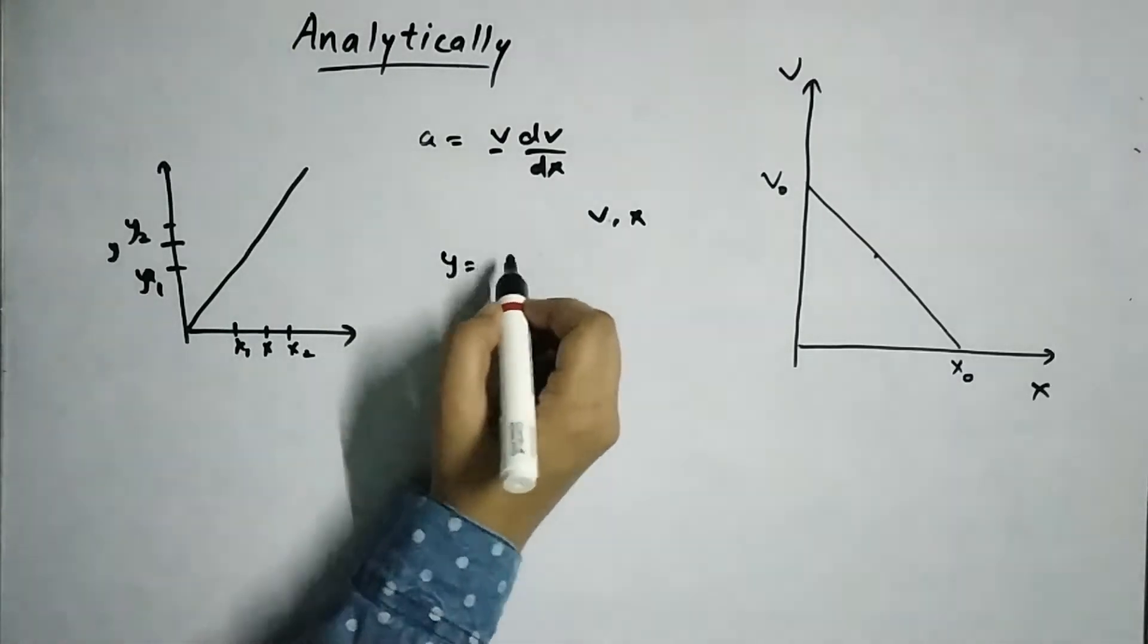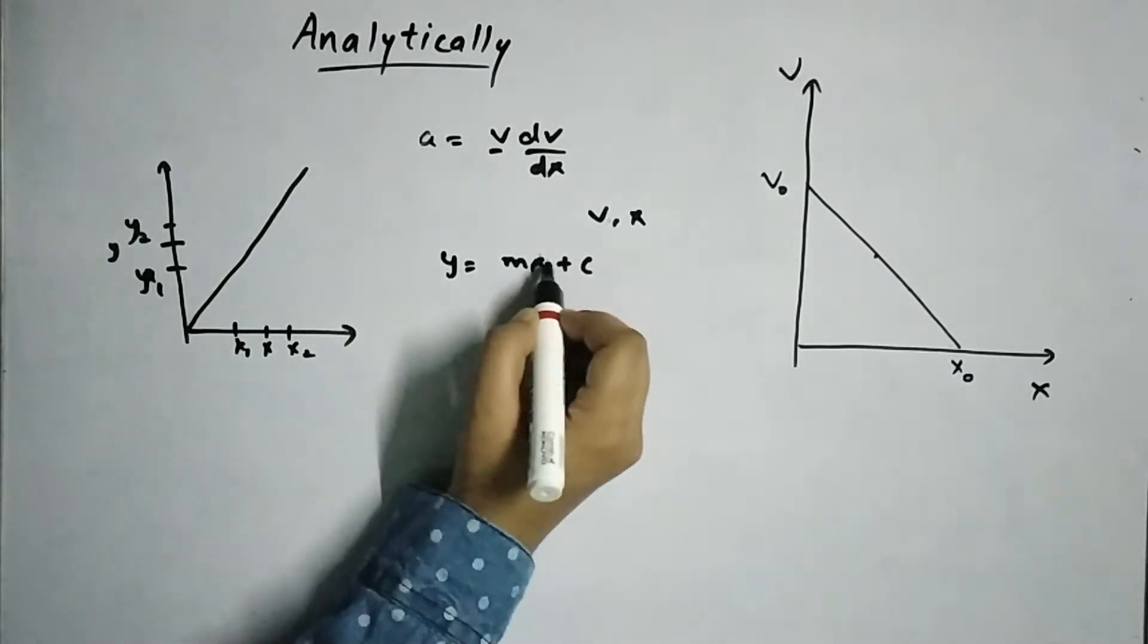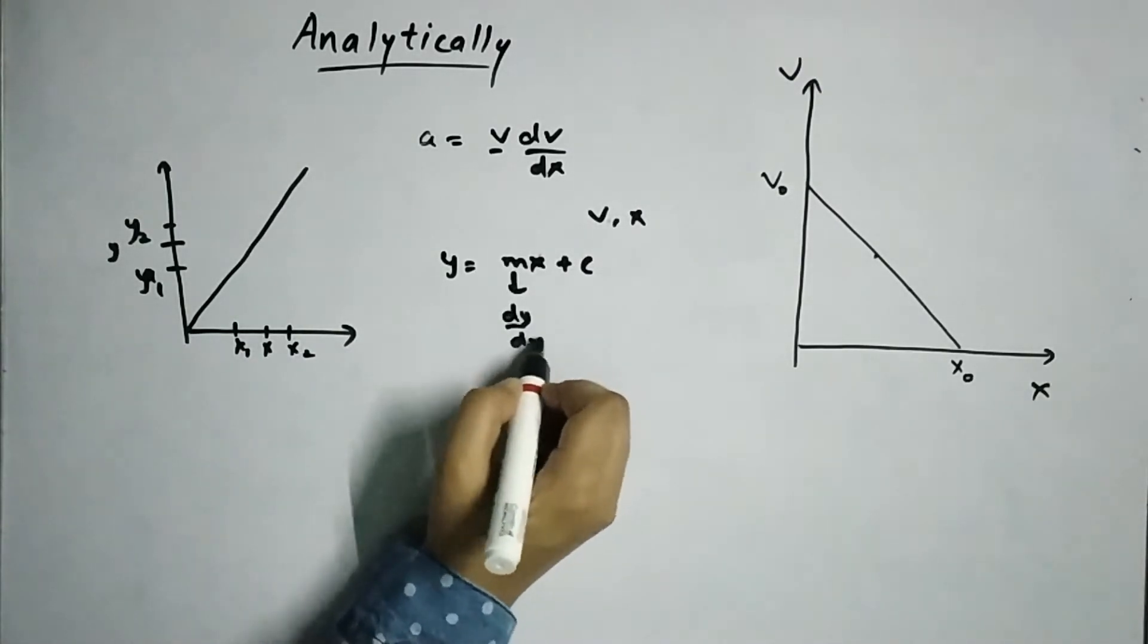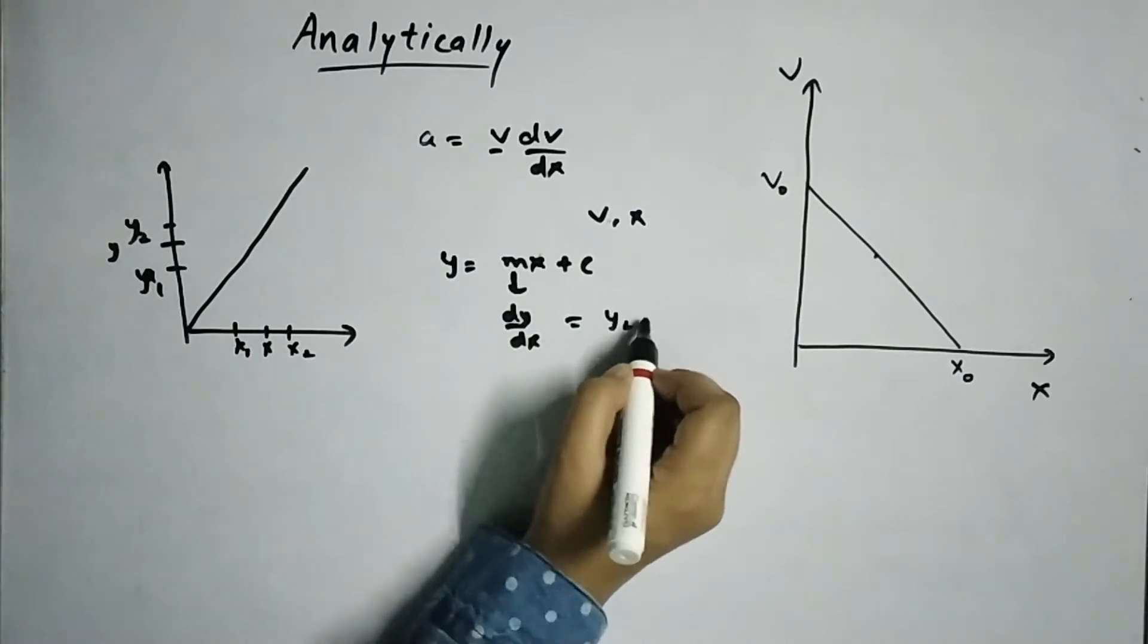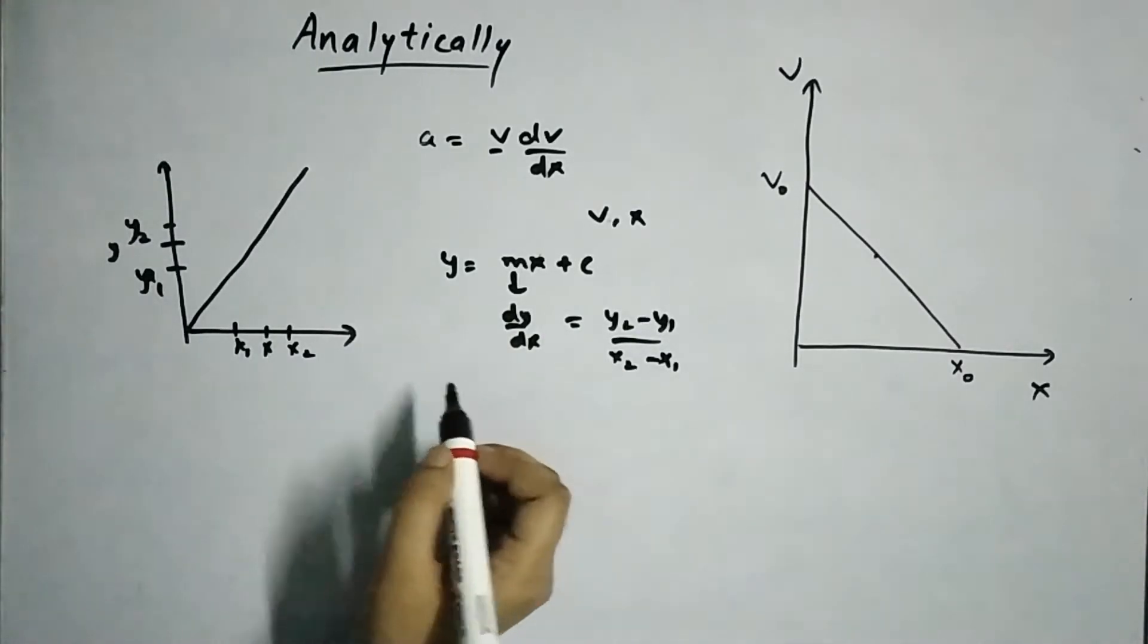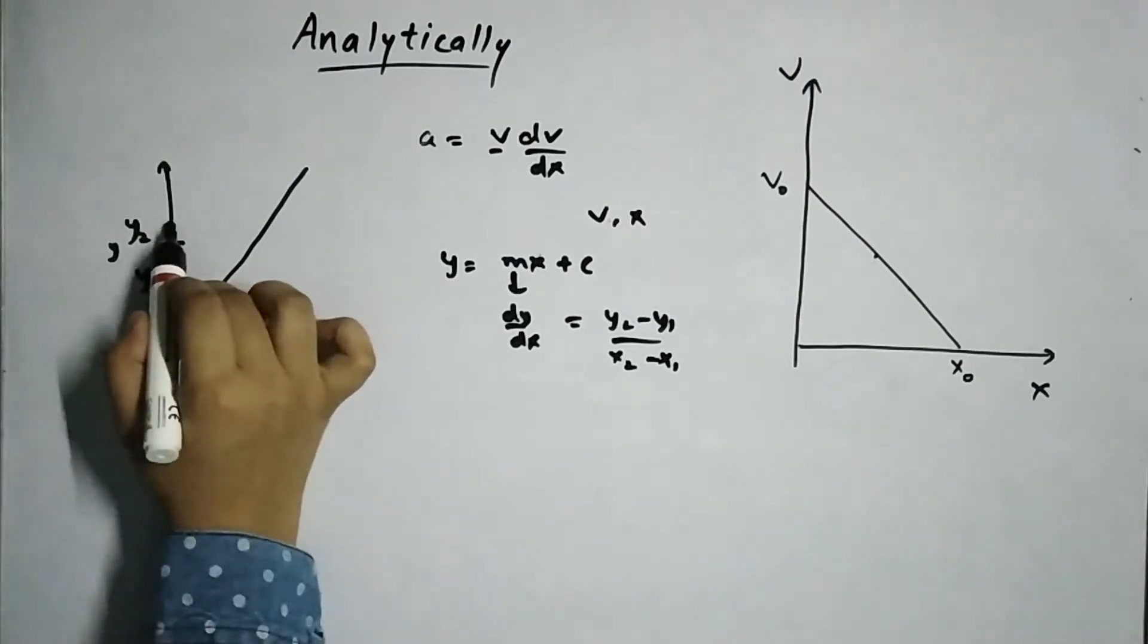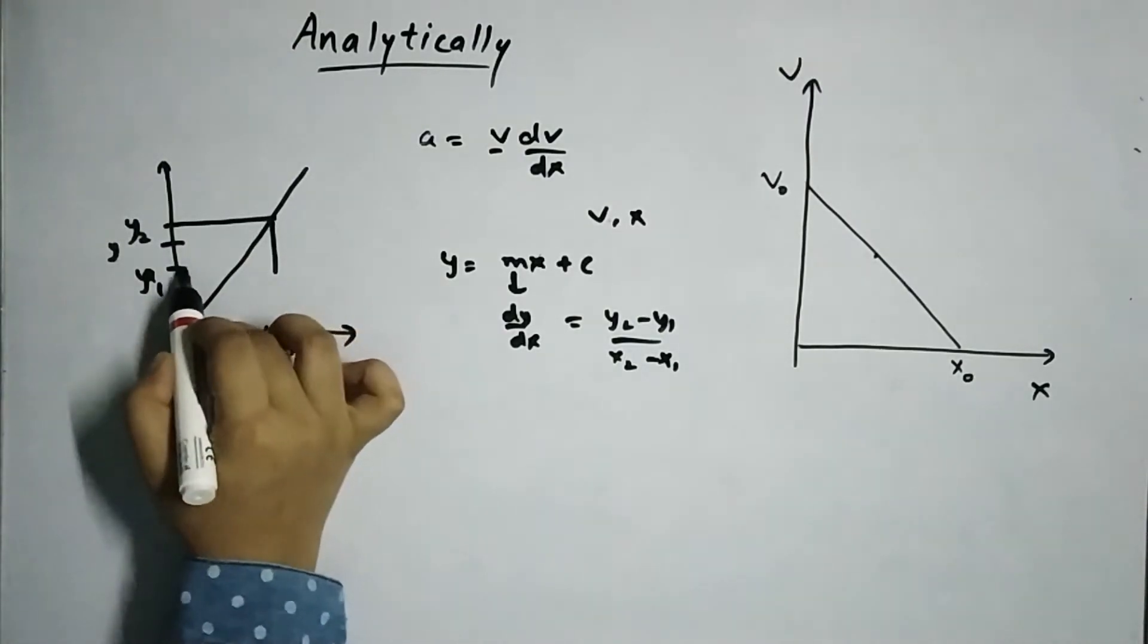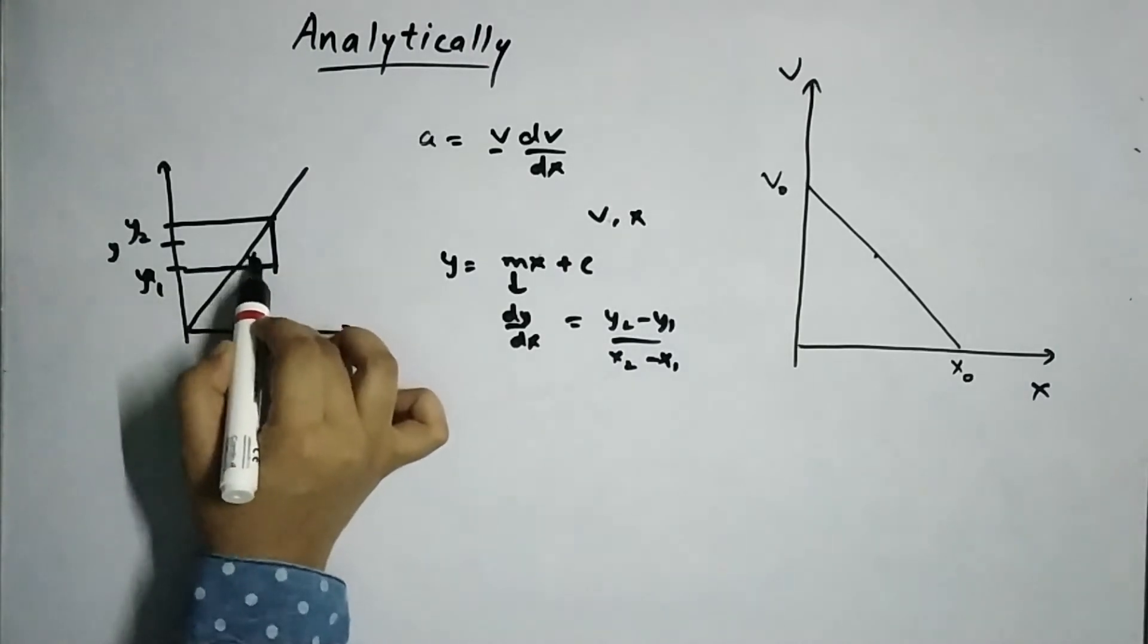I will, so the slope of a line y equals mx plus c, this will be, this will be the slope which will be given by dy by dx or y2 minus y1 upon x2 minus x1.